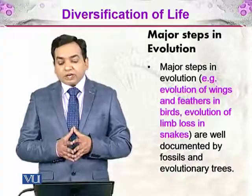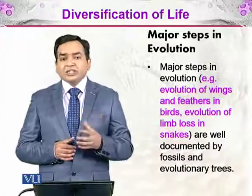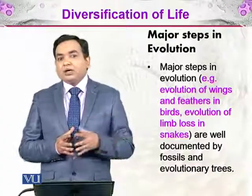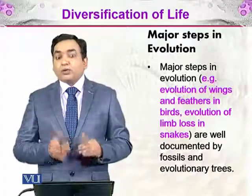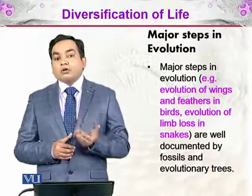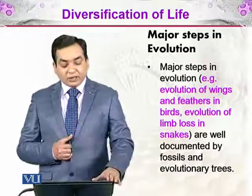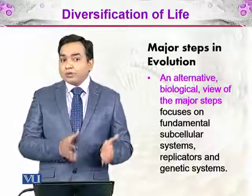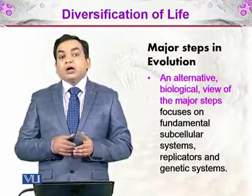There are some major steps in evolution. We have seen the evolution of wings and feathers in birds, evolution of limb loss in snakes. We may have seen Lamarck's theory or Darwin's theory about how the giraffe got its long neck. All of these things have an elaborate fossil record and are documented by evolutionary trees. We can demonstrate these things in some major steps that we will be discussing in further topics, along with alternative biological views of those major steps.